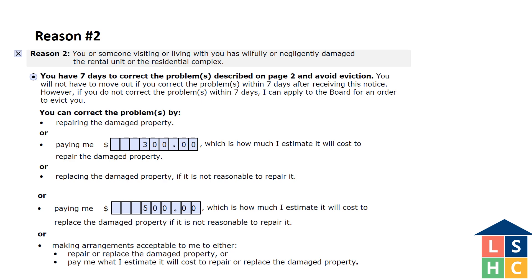Shade in the box next to reason 2 if you are giving this notice for damage. If this is the first N5 you are giving to the tenant, shade in the first circle. This notifies the tenant that they can void it if they pay for or fix the damage during the seven days following the day they were given the notice. If you are including dollar amounts for damage, make sure to obtain at least two written estimates to justify the amount you are asking the tenant to pay. If the damaged items cannot be repaired, include estimates for the cost to replace them. Note: you can serve the tenant with a written 24-hour notice to enter the unit before serving the N5 notice if you need to perform a maintenance inspection to assess any damages.